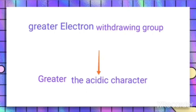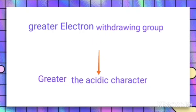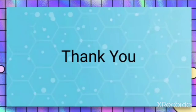So the two key points to remember: greater the electron-releasing group (like R, alkyl, NH2, OR), lesser the acidic character; and greater the electron-withdrawing group (like CN, NO2, halogens), greater the acidic character. Once you are clear on these two points, you can easily solve problems related to acidic character of alcohols and phenols.